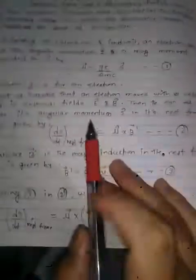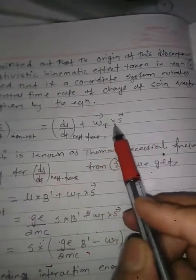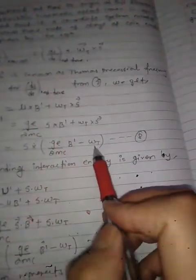The total time rate of change of spin vector S is given by: dS/dt (non-rotational frame) = dS/dt (rest frame) + ωT × S, where ωT is known as the Thomas precession frequency. Substituting for dS/dt (rest frame) from equation 2, we get dS/dt = μ × B' + ωT × S, which becomes S · [(g/2mc)·B' − ωT].